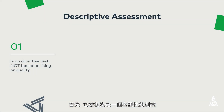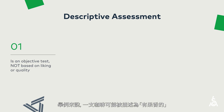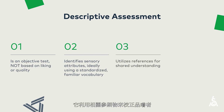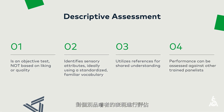Some key things to know about a descriptive assessment. First, it is seen as an objective test, without any basis in liking or quality. As an example, a coffee might be described as fruity without any judgment of whether fruitiness is a good or bad thing in coffee. Second, it identifies these flavors, also known as sensory attributes, using a standardized familiar vocabulary. It uses references to calibrate tasters and create a shared understanding. Finally, an individual taster's performance can be assessed against other trained panelists.